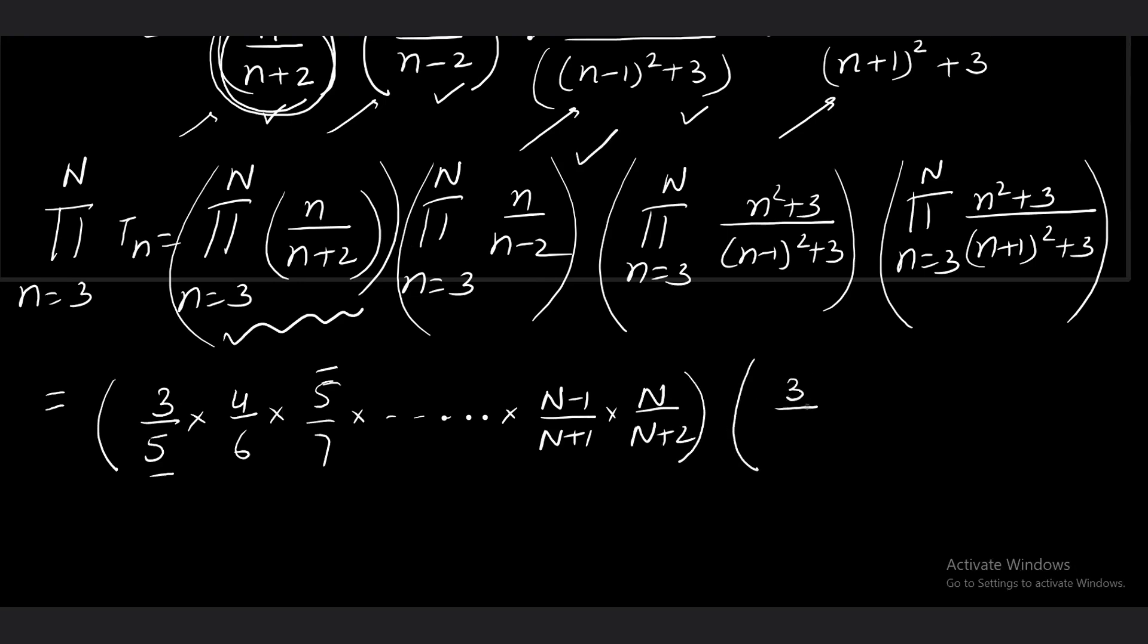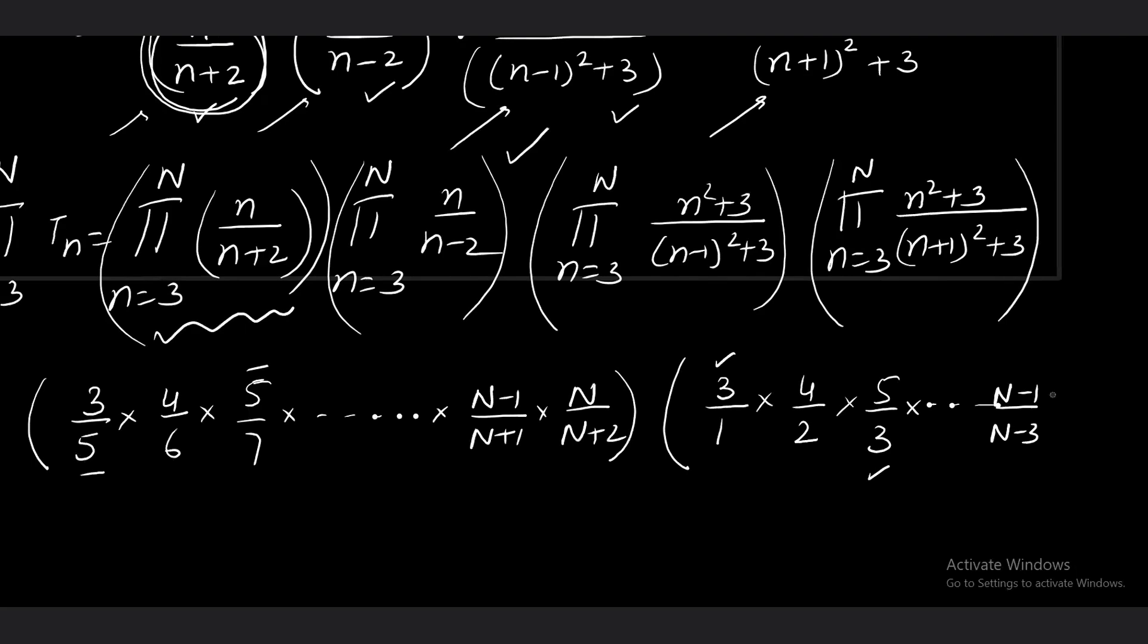Coming to the second continued product, I started with 3. So 3/(3 - 2), then 4/2, then 5/3. Same story - the terms started getting cancelled after 2 terms. So write the last 2 terms: (n - 1)/(n - 3) and n/(n - 2).